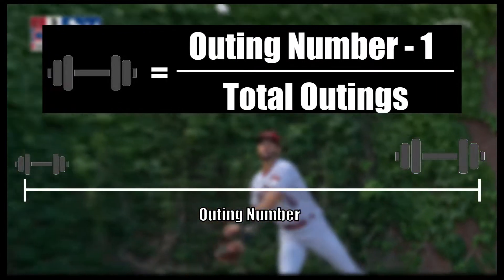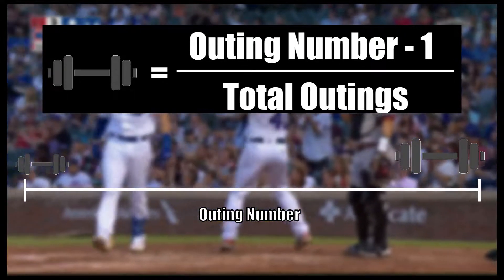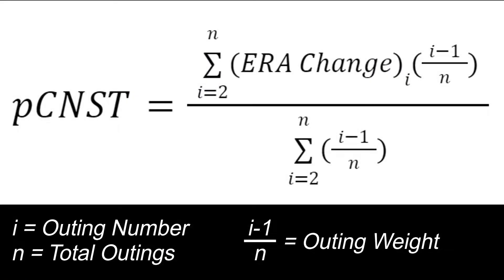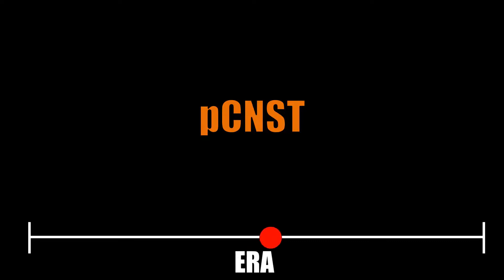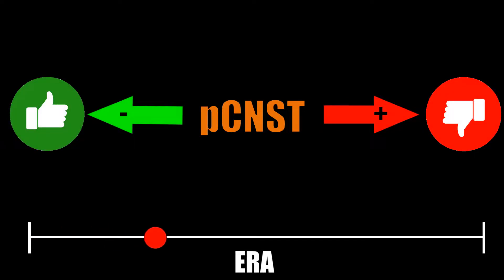For those of you that are a little more math savvy, here's what the pitching consistency equation would look like. In simple words though, it'll be a stat that tells you how much a pitcher's ERA is changing from game to game throughout a season. The lower the number, the more consistent a pitcher has been. So now that we have our stat ready to go, let's see how some of this year's pitchers stack up. Will our stat pass the eye test?